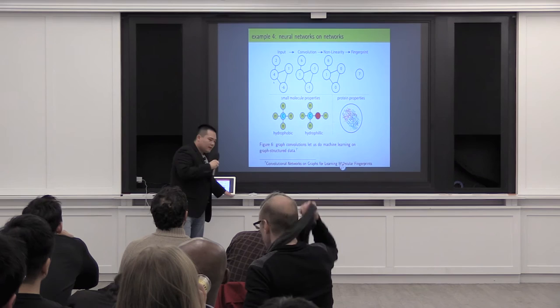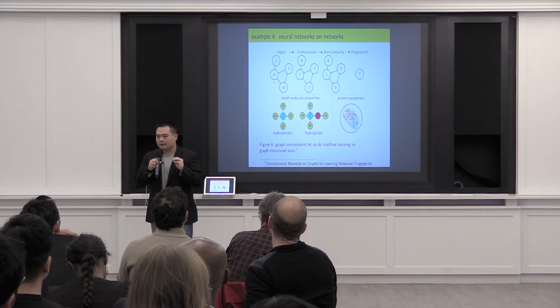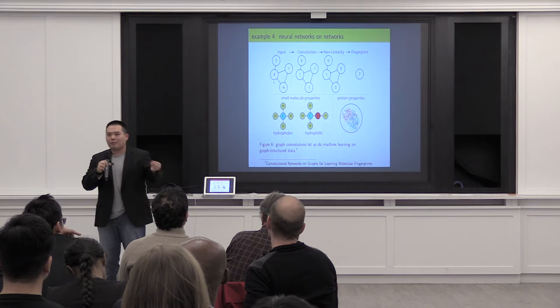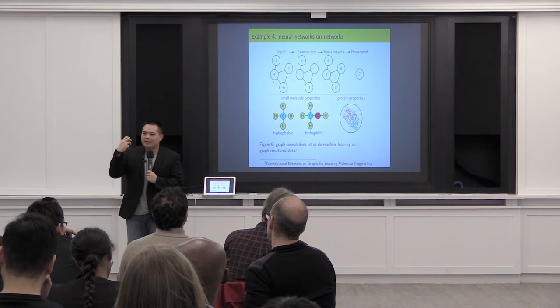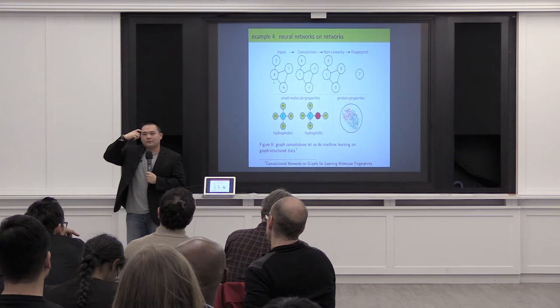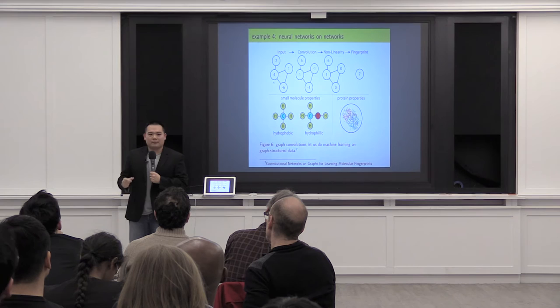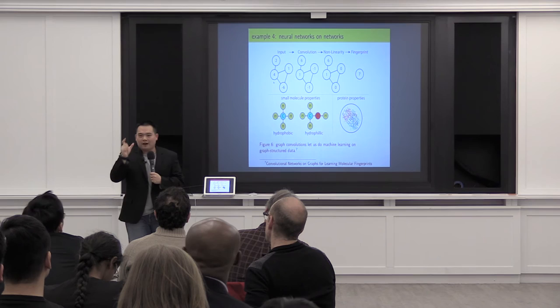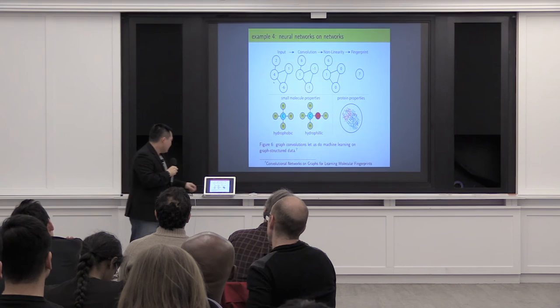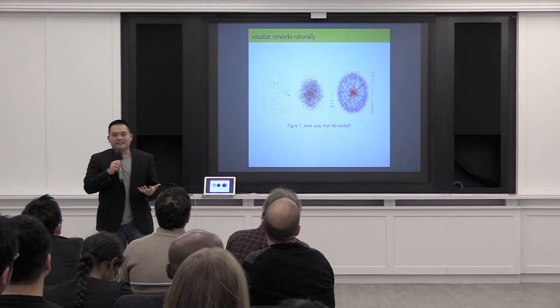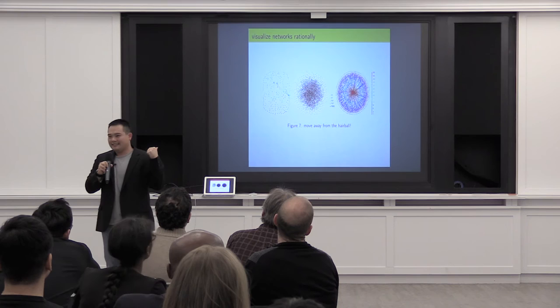We had four examples of where networks were useful: recommendation systems, the Panama Papers, influenza reassortment, and machine learning on molecular graphs. The key takeaway: start thinking relationally about your data points — not just as independent, identically distributed samples from a population. The edges in a network form the heart of a graph, and that is where the richness of network analysis comes from.